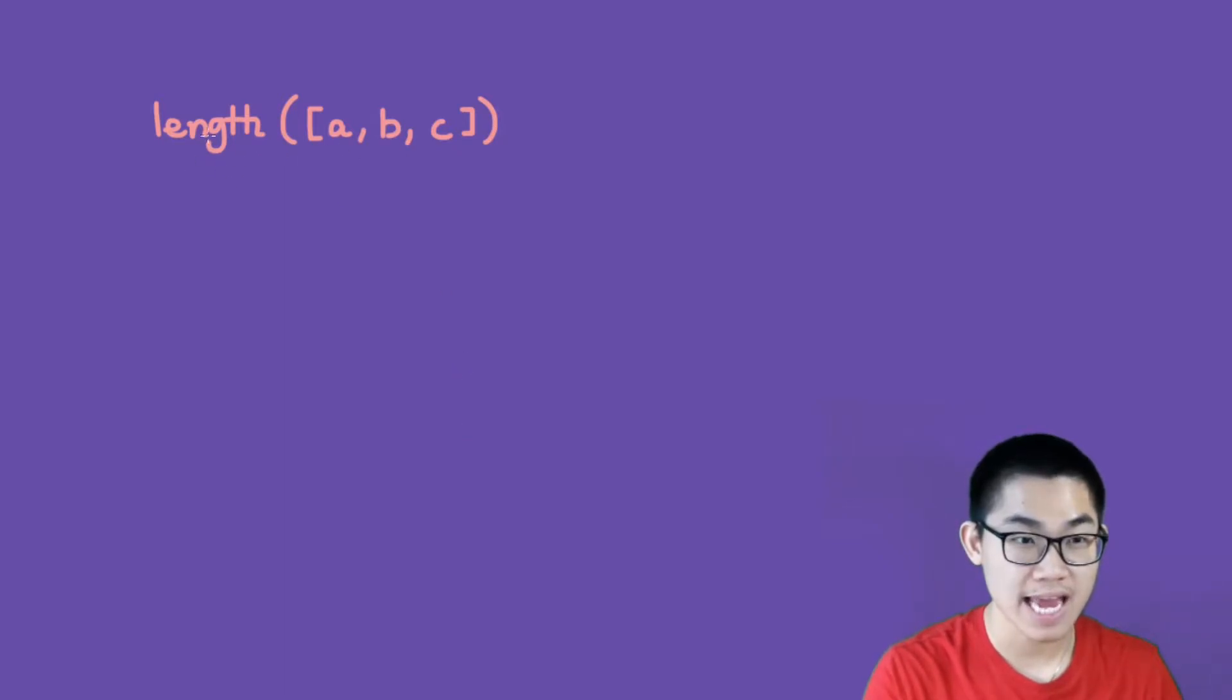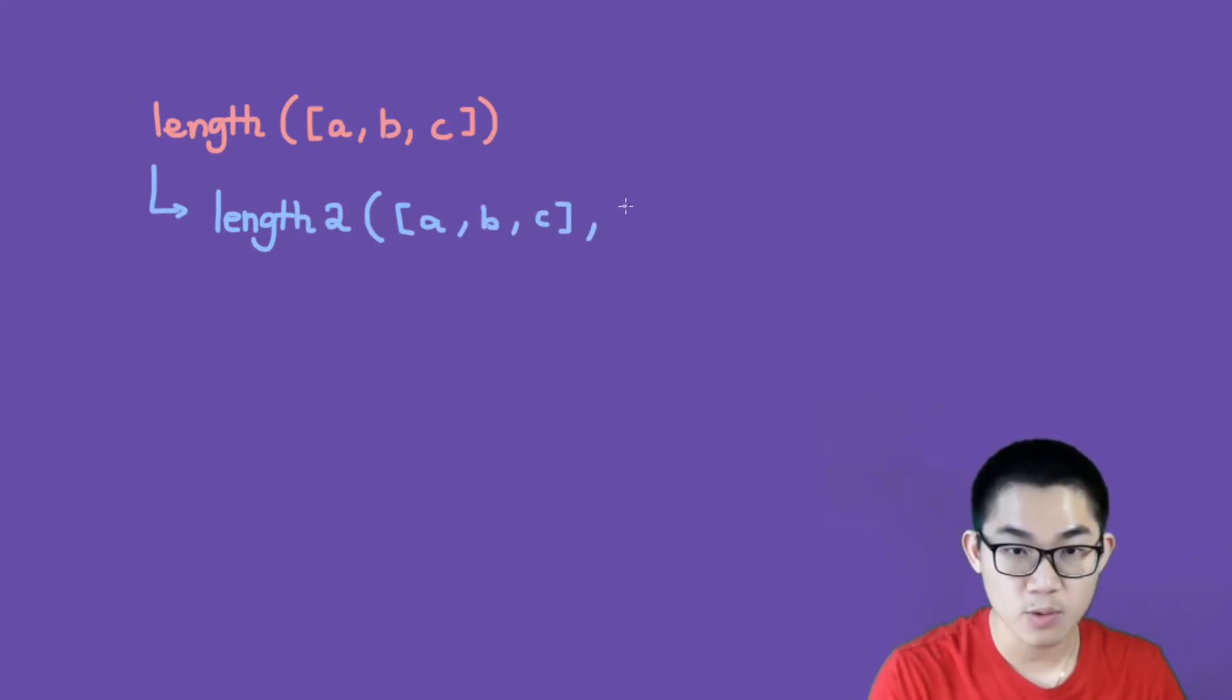So here we have the length function, and it needs to call on itself. However, we also need another variable to keep track of how many elements there are. So let me show you what I'm going to do here. So this is going to call on a different function. We have length 2, and then the list is going to stay the same. So A, B, C. And this time, we will add an extra parameter of 0. And this is the parameter that's going to keep track of how many elements inside. And you'll see why this works in a second.